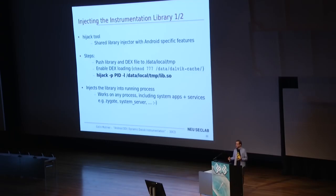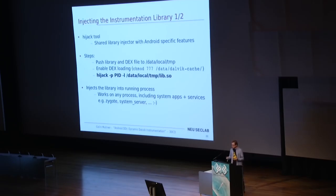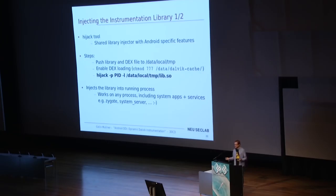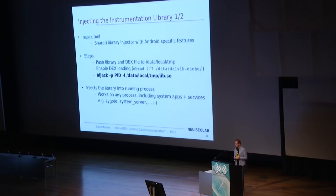But how do we actually install a hook into the system or an application? For this, I created the hijack tool, which is basically a port and some enhancements of a very simple Linux shared library injector. After you create your library, you push it to /data/local/tmp. If you want to load additional DEX classes, you also have to make the Dalvik cache directory world-writable. Then you use the hijack tool, provide the PID of the target process and the full path to the library, and run it — that injects the library into the running process. It really works for any Dalvik-based process on an Android system, including Zygote and system servers, so you can do modifications deep in the core framework on your running device.